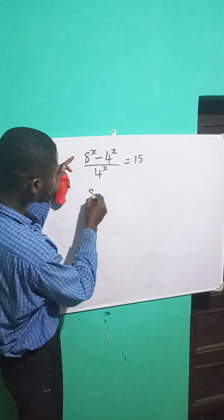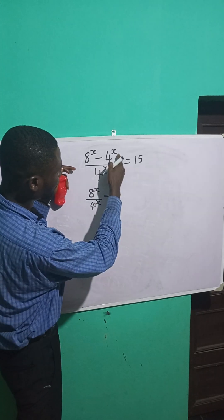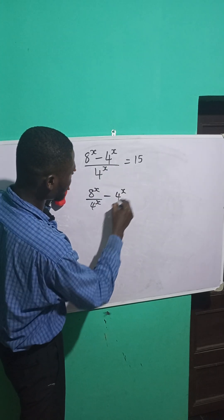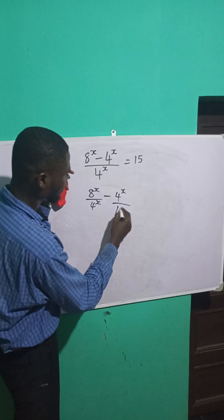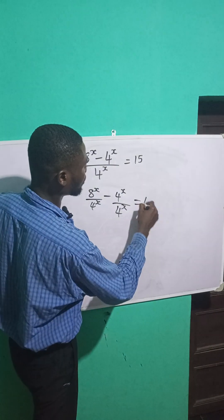So this can be written as 8 raised to power x over 4 raised to power x minus 4 raised to power x over 4 raised to power x. Because this is dividing both numerators, it's equal to 15.